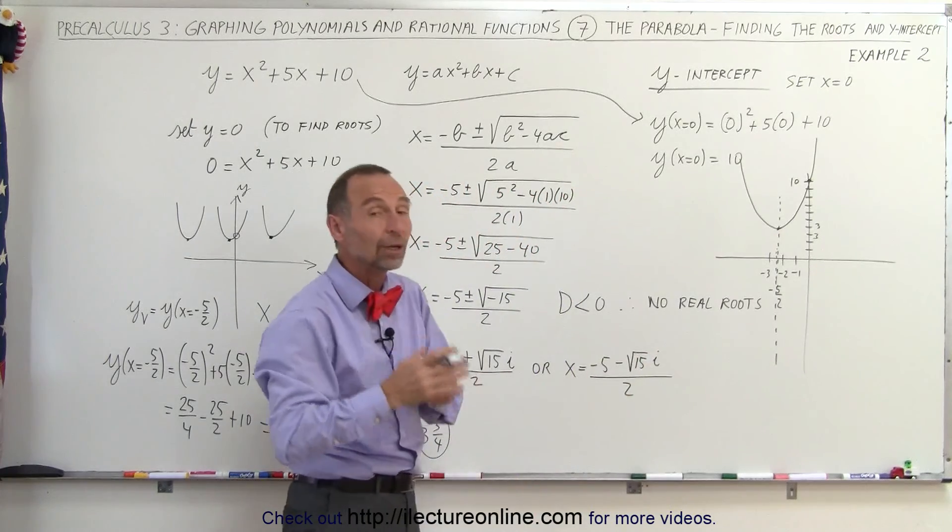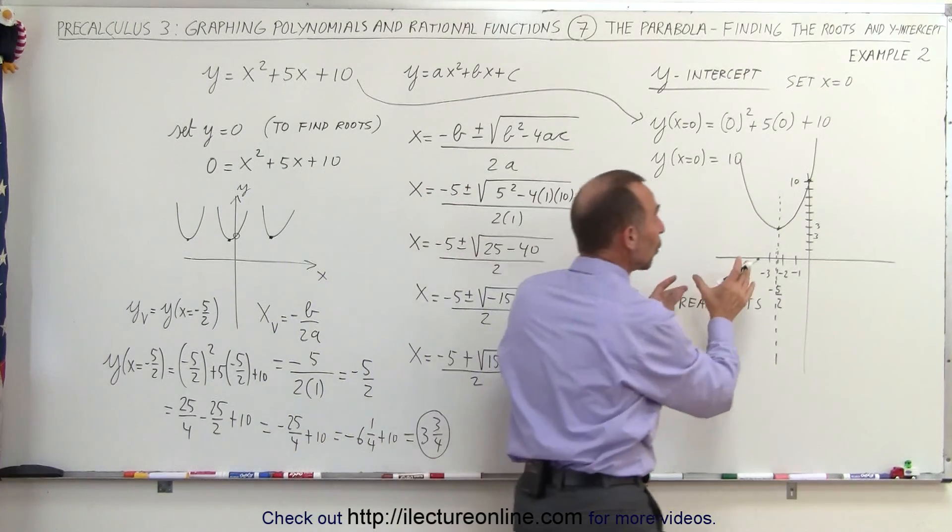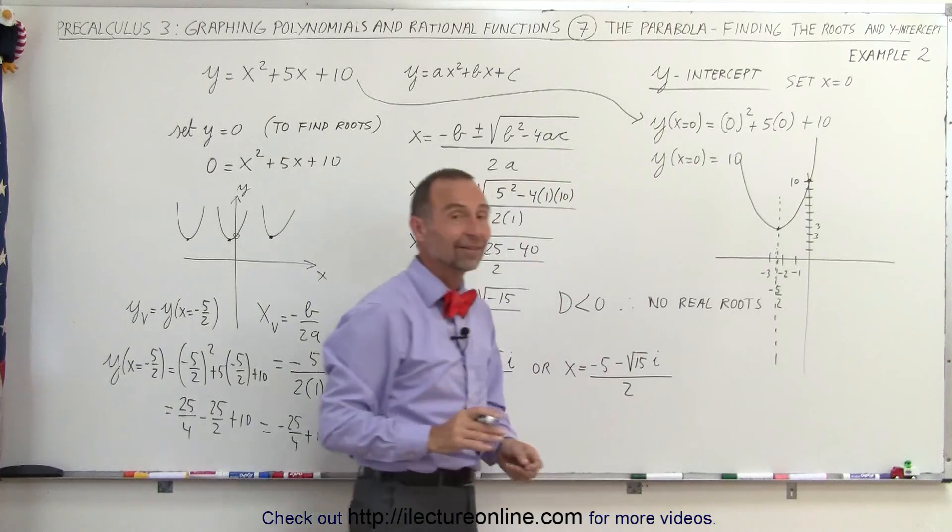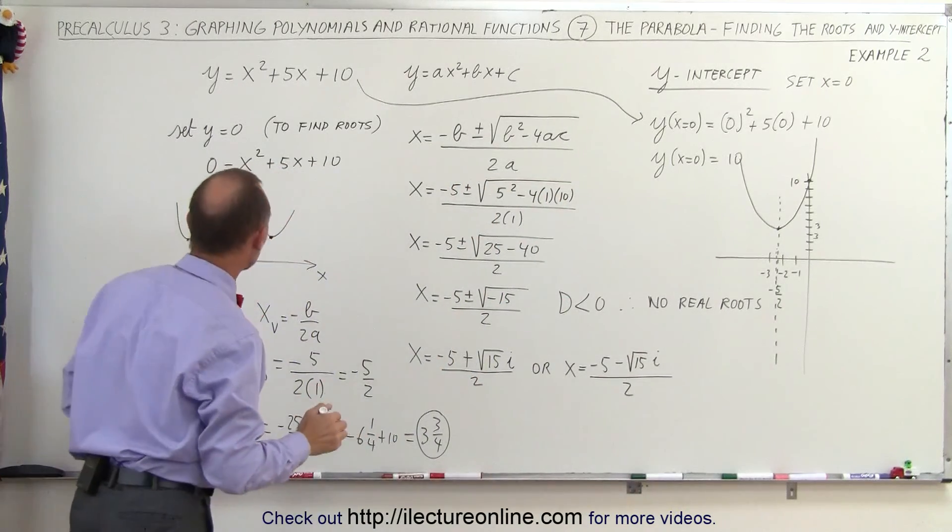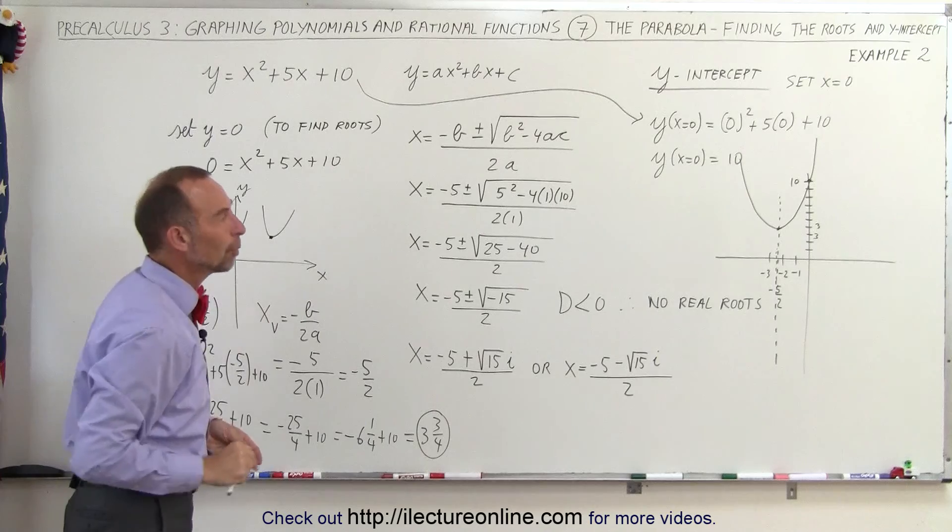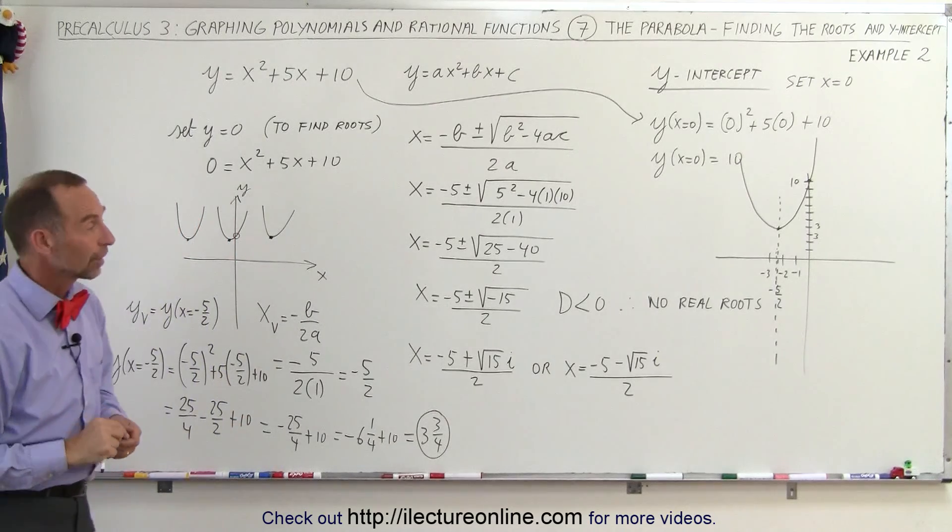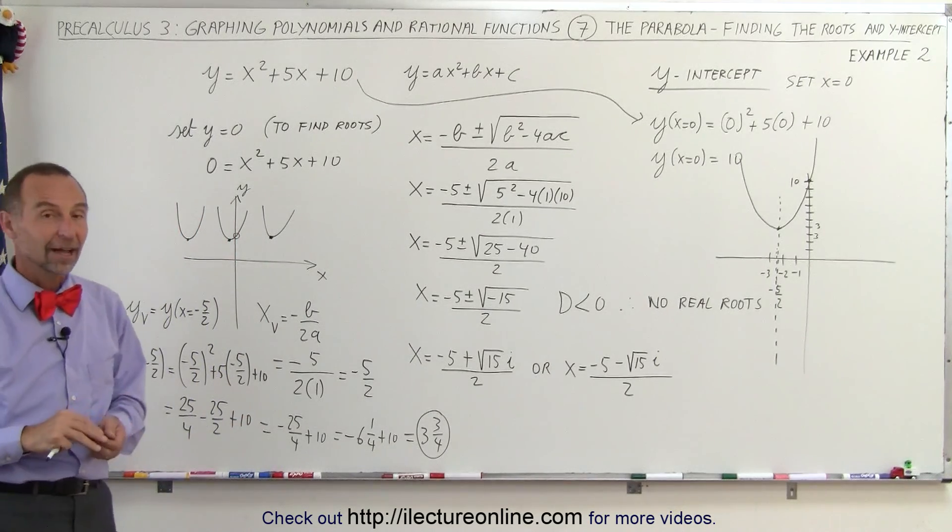And now we have a way to graph that particular parabola. The reason why this one is more difficult to graph is because we could not find the real roots to help us figure out where the parabola was situated. Since we didn't have the real roots, it was helpful to go ahead and find the vertex to find the second point about which we can graph this particular parabola. And that's how that's done.